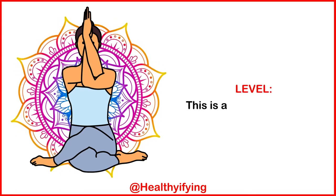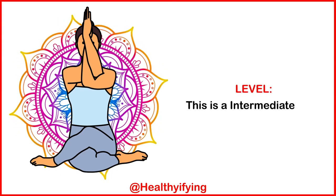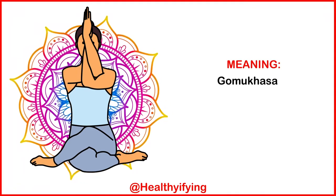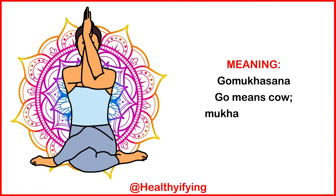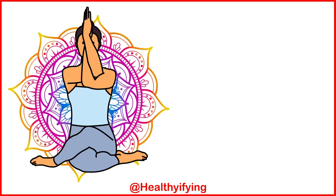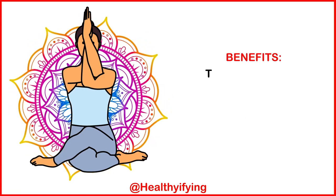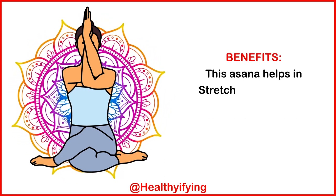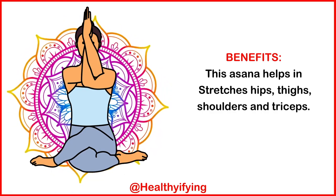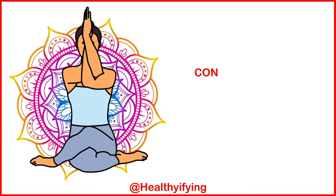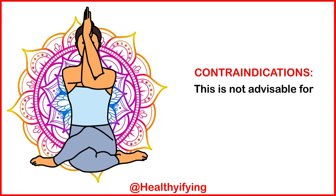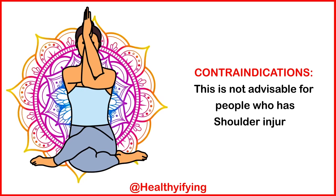Level: this is an intermediate level. Meaning: Go Mukhasana — Go means cow, Mukha means face. Benefits: this asana helps and stretches hips, thighs, shoulders, and triceps. Contraindications: this is not advisable for people who have shoulder injury.